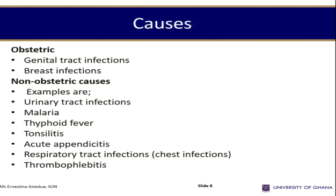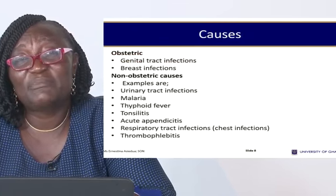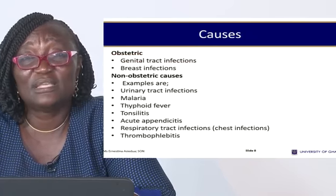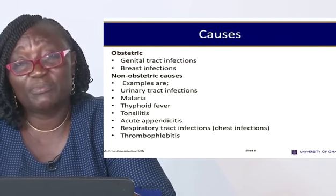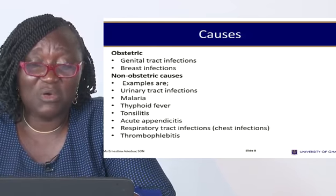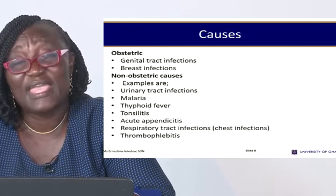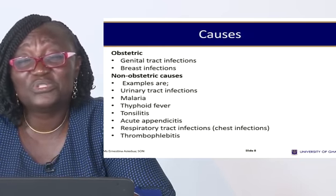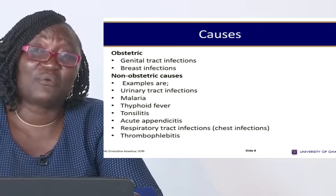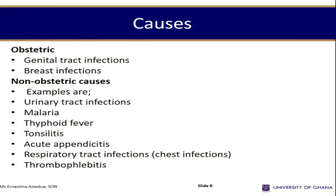Obstetric causes of puerperal pyrexia include genital tract infections and breast infections. When the baby has difficulty suckling, the breast can become engorged, leading to mastitis and subsequently breast infections, which cause raised temperature. In all deliveries, there can be normal minimal cuts or scratches in the genital tract, and if the woman is douching after delivery, the raw surfaces can develop genital tract infections causing pyrexia.